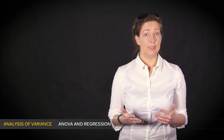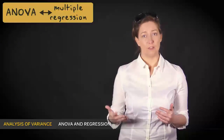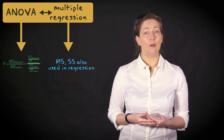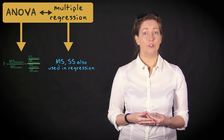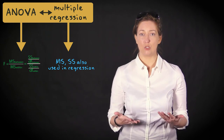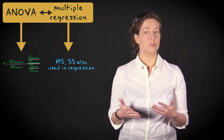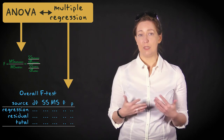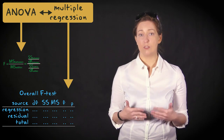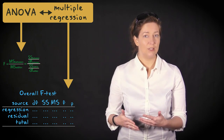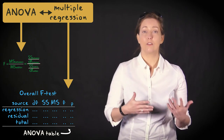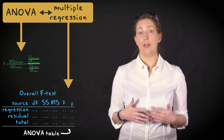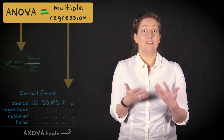In this video, we'll discuss the link between analysis of variance and multiple regression. You may have noticed that the between and within-group variances are expressed in terms of sums of squares and mean squares, which we also use in multiple regression. It's also not a coincidence that the table of mean sums of squares and sums of squares in multiple regression is often referred to as the analysis of variance table. In fact, multiple regression and analysis of variance are technically the same.